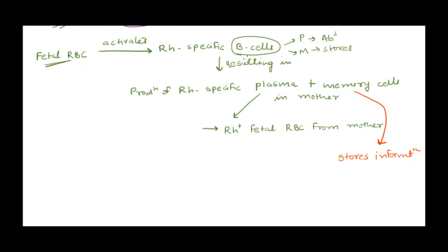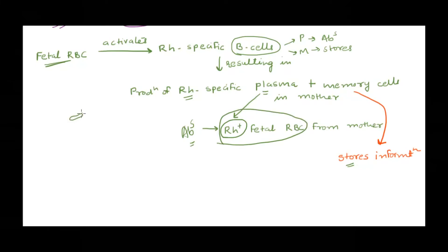Once the B cells get activated, they produce plasma cells that secrete antibodies and memory cells that store the information — as discussed in the immune system video. The B cells of the mother are activated against the RH antigen specifically, producing antibodies against the RH factor of the fetal RBC. The memory cells store the information about this antigen. These antibodies then clear up the fetal RBCs containing antigen D from the mother's circulation.